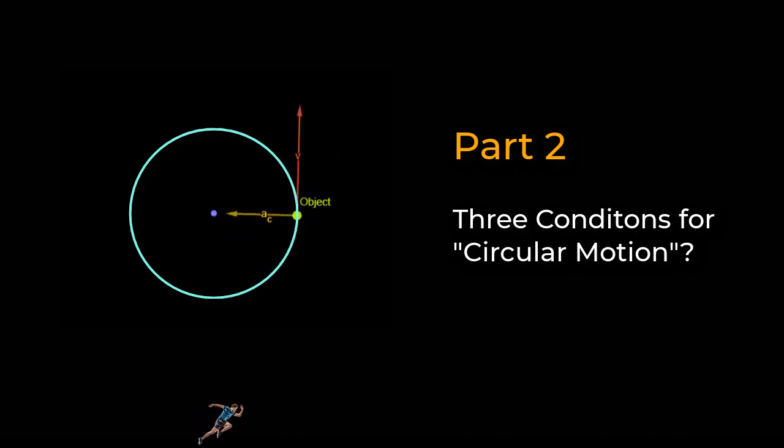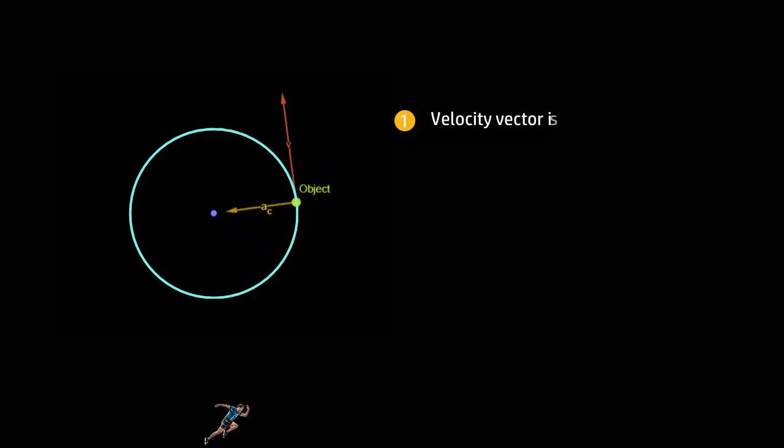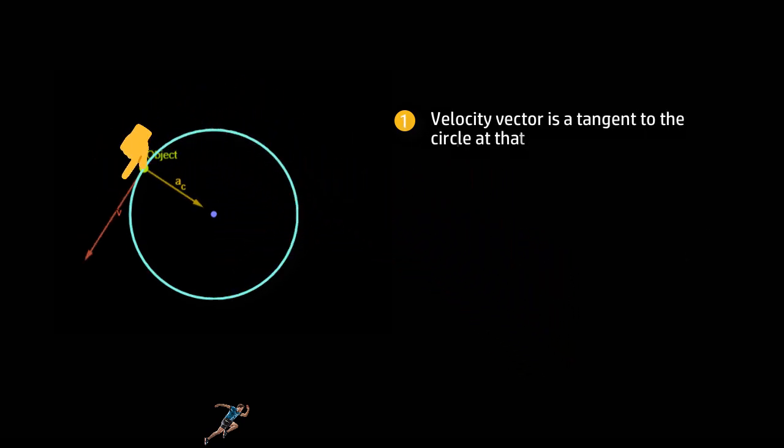So whenever you see an object undergoing uniform circular motion, three things are for sure. One, the velocity vector is always a tangent to the circle at that point.